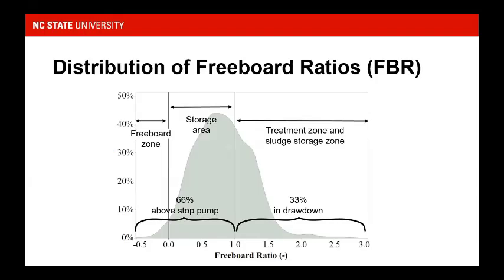Looking at the results, the distribution of freeboard ratio shows that two-thirds of our cases fell above the stop pump — either in our temporary storage area or in our freeboard. Only about 2% fell in the freeboard zone, which increases the risk of breaching and is something we're trying to avoid. About a third of data points fell when lagoon levels were into the treatment zone, where there's potential to sacrifice treatment volume. But this alone doesn't tell the whole story, since we still need to know where the sludge is in relation to the liquid level.